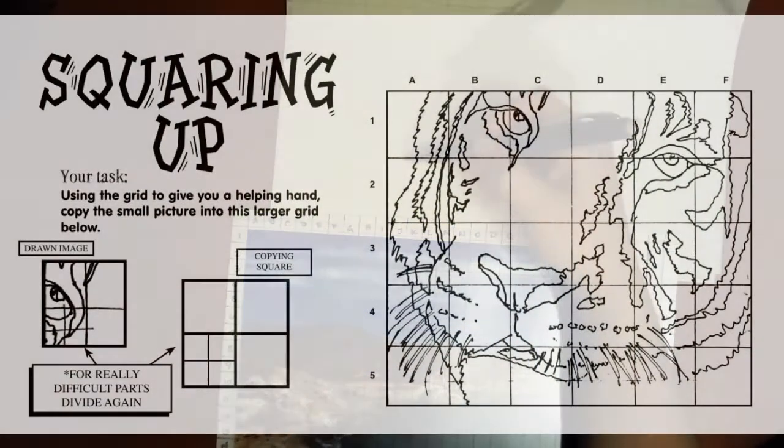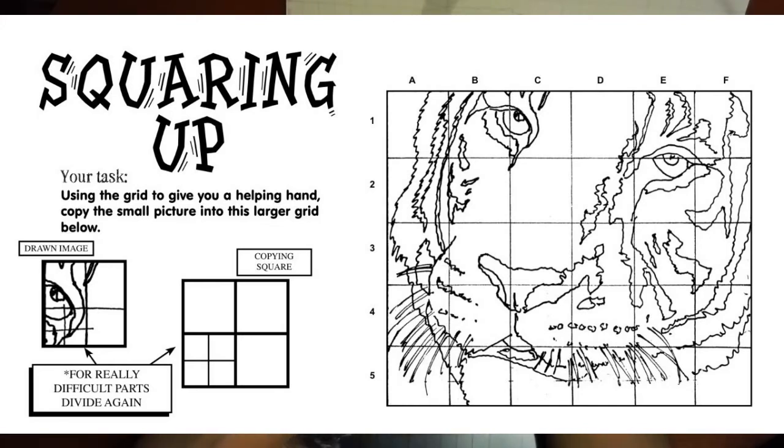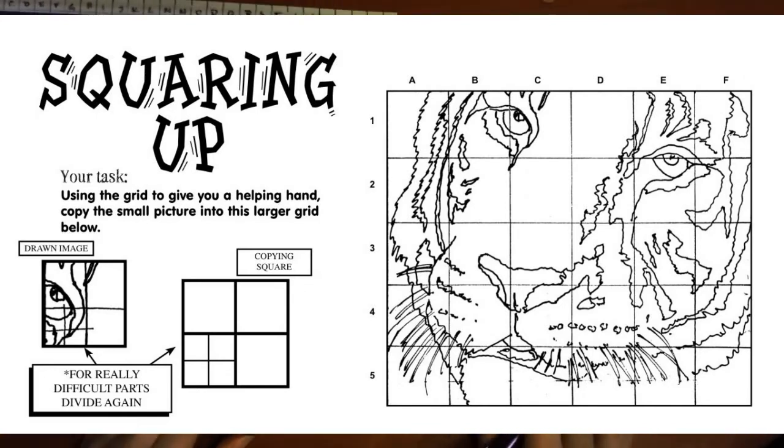If you get stuck, please use this as a reference—you can use this cross method. Where does it intersect within the box itself? Is it in the middle? Is it towards the bottom? You can use that to complete your image.